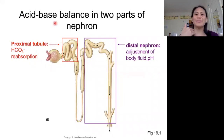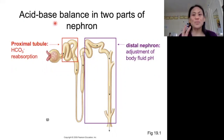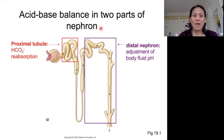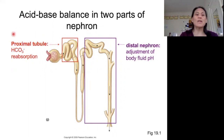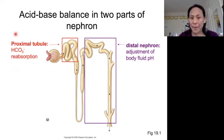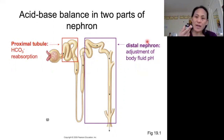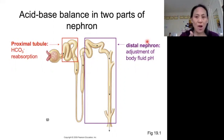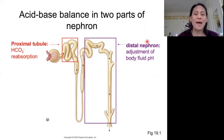We're going to have activities that contribute to acid-base balance in two main parts of the nephron. The first is the proximal tubule, and the second is the distal nephron. In the proximal tubule, basically what happens is we end up reabsorbing bicarbonate. In the distal nephron, we are going to adjust our secretion and reabsorption of bicarbonate or hydrogen ion depending on the body's needs at that time.